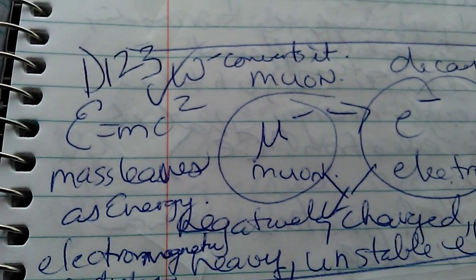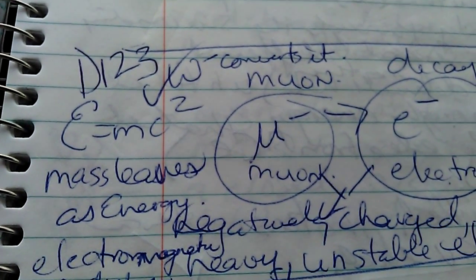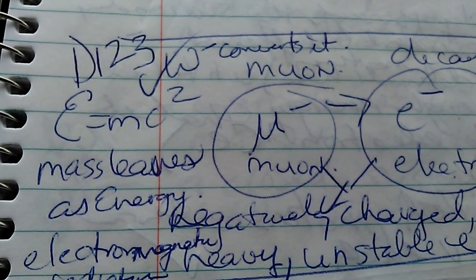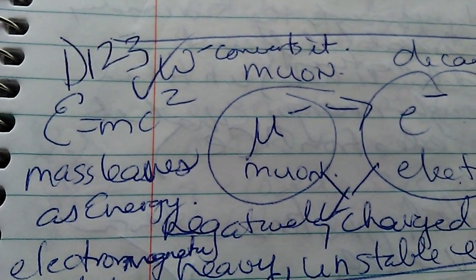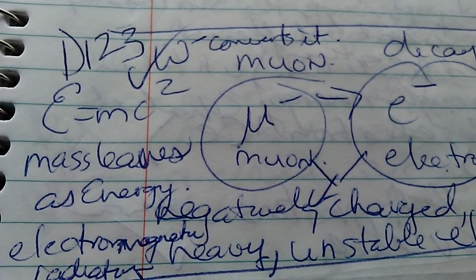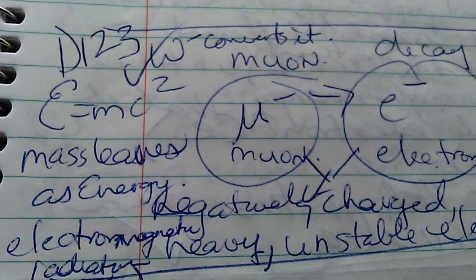Diagram 123 is the WZ bosons, which are negative. They convert to a muon in a decay process.